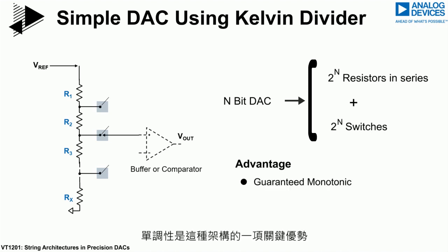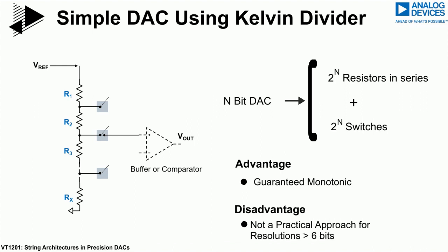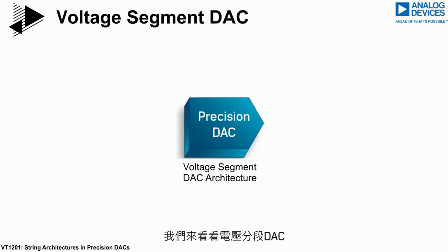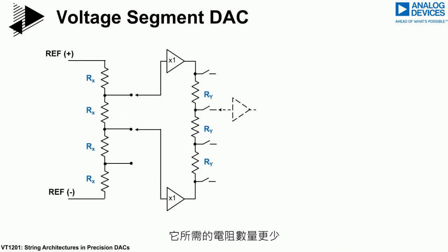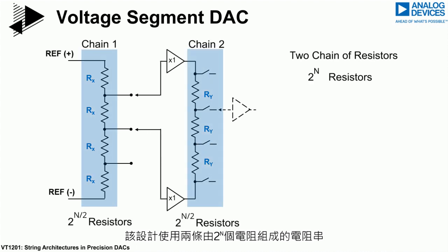A key advantage is the monotonicity associated with this architecture. However, a large number of components are required to implement such a DAC, making it a non-practical architecture if high resolution is required. If we now look at a voltage segment DAC, here the number of resistors required is much less. This design uses two chains of 2-to-the-n resistors, where the second string of resistors are connected across adjacent taps on the main string.